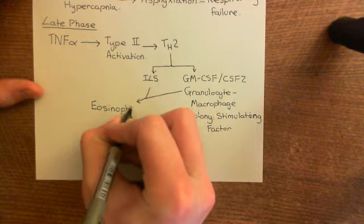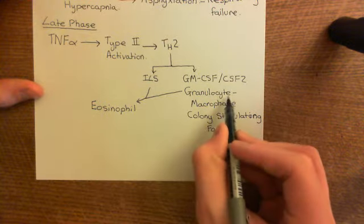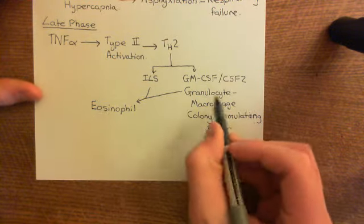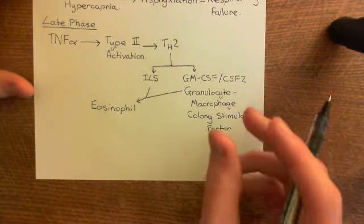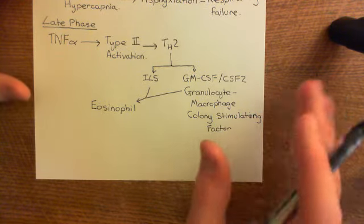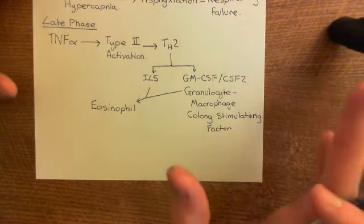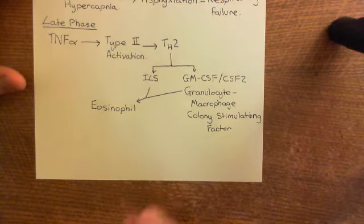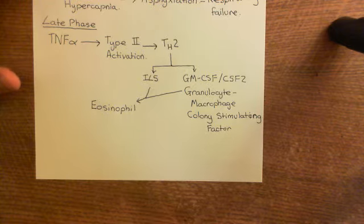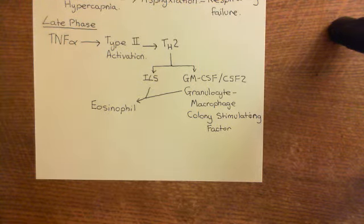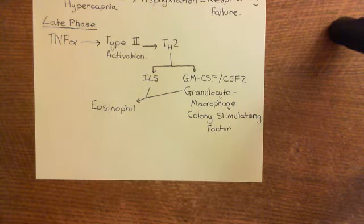Eosinophils are a type of granulocyte. There are three types of granulocytes: neutrophils, eosinophils, and basophils (which do very little). Eosinophils are very powerful — the cells your body uses when dealing with multicellular parasites. No other cell in the immune system would stand a chance against a parasitic worm; eosinophils are what we use.